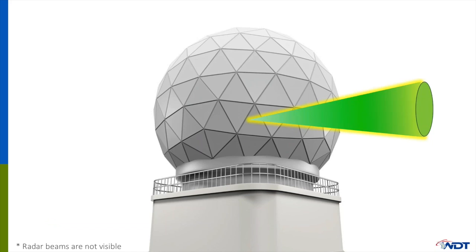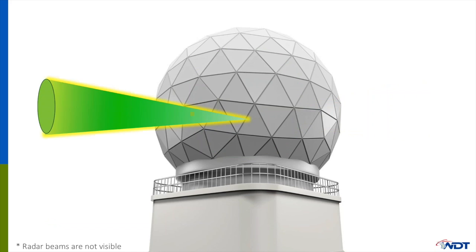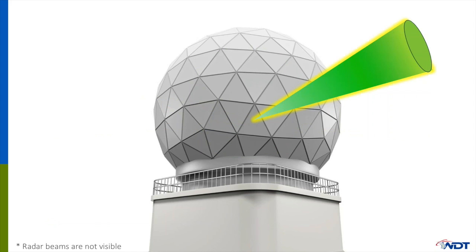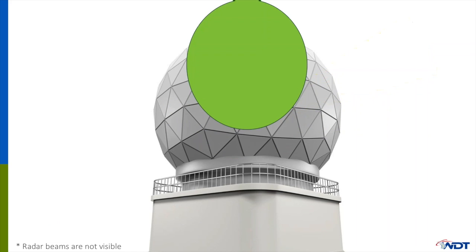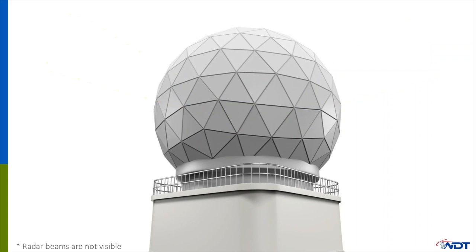A radar beam rotates within the radome and it elevates when looking for weather. These are called tilts. It is important to note that radars do not look at ground level — they are actually looking higher into the storms.